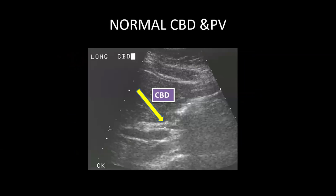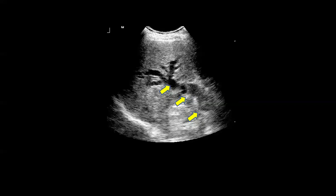Here we have an example of ultrasound. You can see this is liver, this black area is basically portal vein, and this is CBD. This is the area where we have measured CBD. Normally the range of normal diameter of the CBD would be between 3mm to 7mm. This is an example where we can see dilated intrahepatic and extrahepatic biliary channels.